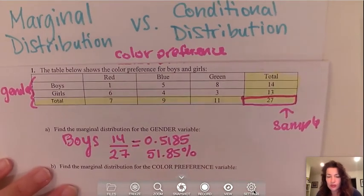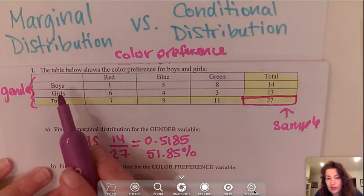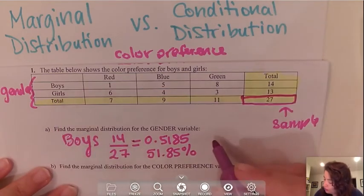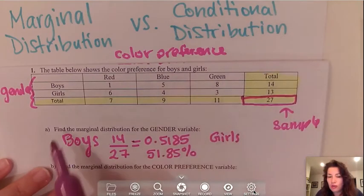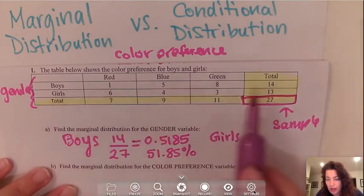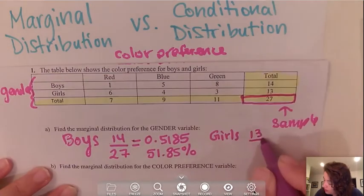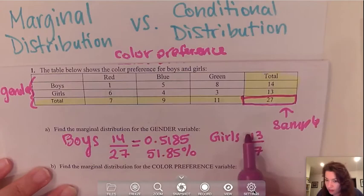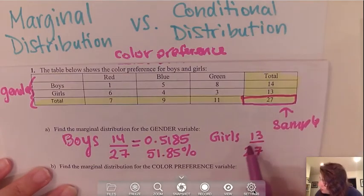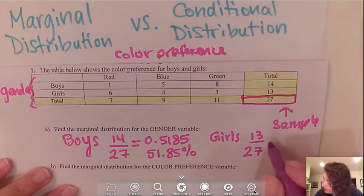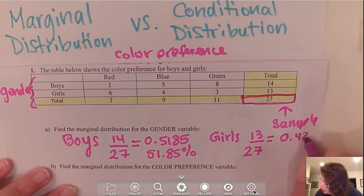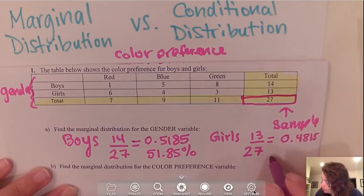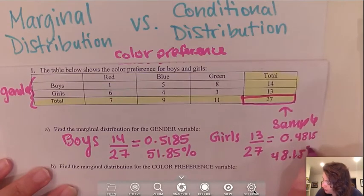We're not done yet because we still have the girls. So if I want the marginal distribution for girls, I'm going to look at the total girls — that is 13 over the total sample size of 27. When you're looking at this, 14 and 13 should add up to 100%. So 13 out of 27 gives you about 0.4815, which is 48.15%.